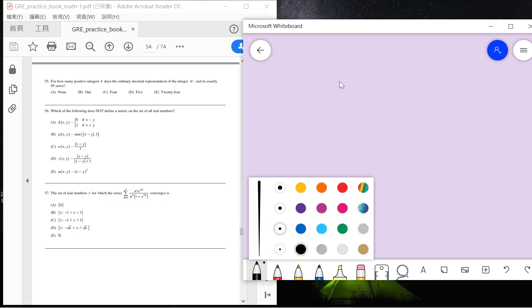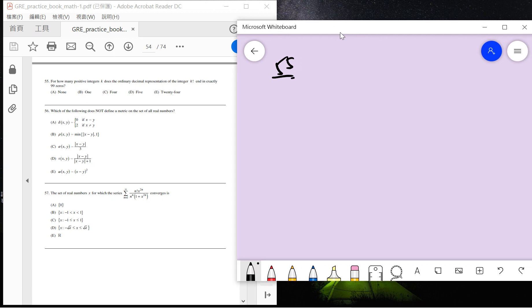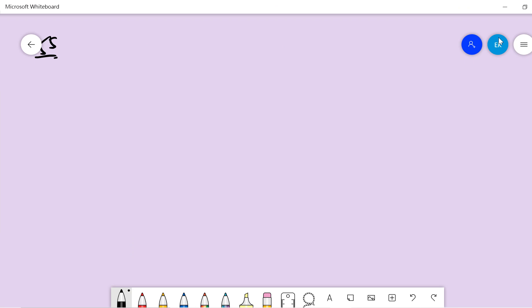Okay, number 55: How many positive integers k does the decimal representation of k factorial have exactly 99 zeros? To solve this we need to understand a fact.